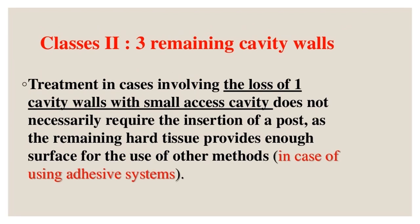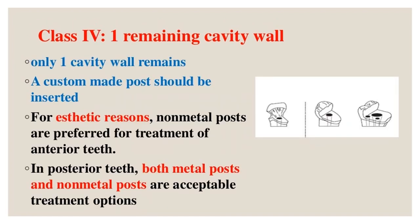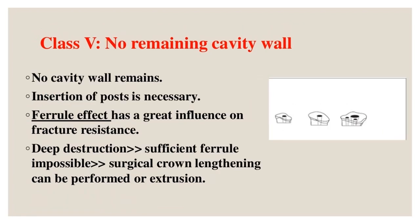Class III — 2 remaining cavity walls: a ready-made post should be inserted. Class IV — 1 remaining cavity wall: a custom-made post should be inserted. For aesthetic reasons, non-metal posts are preferred for anterior teeth; in posterior teeth, both metal and non-metal posts are acceptable. Class V — no remaining cavity wall: insertion of posts is necessary.